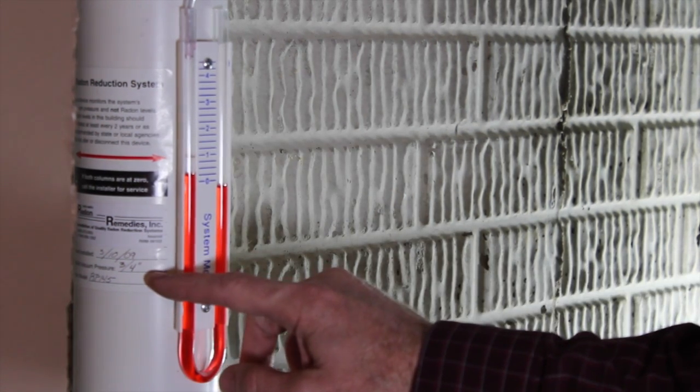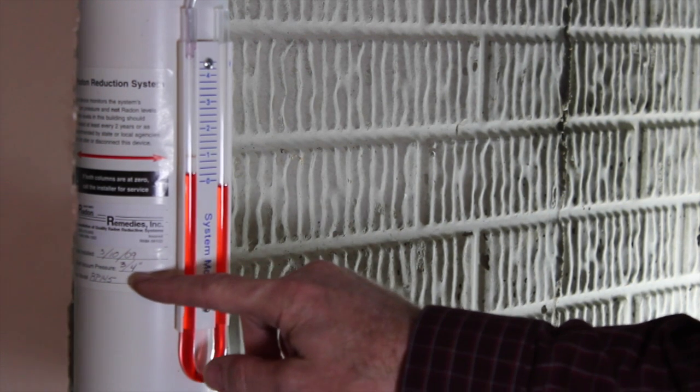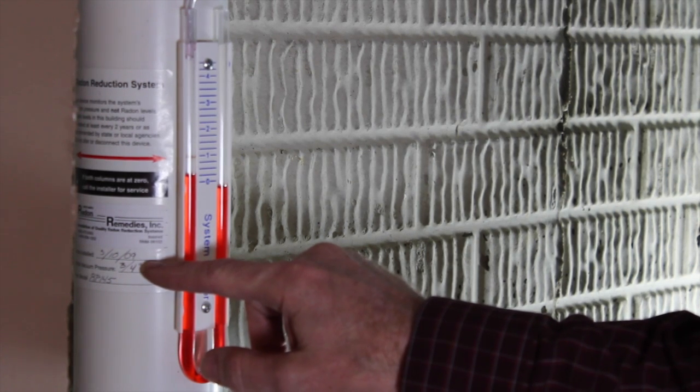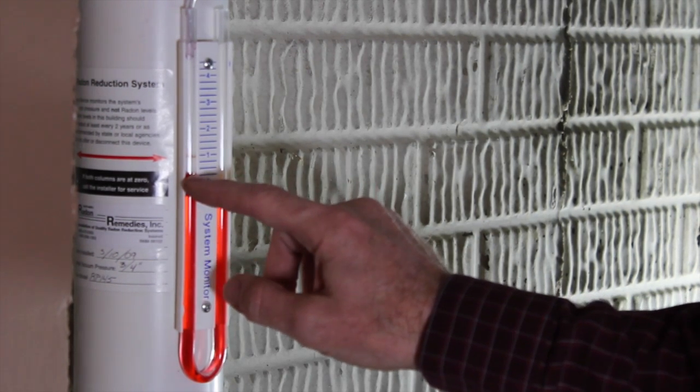The system will also have a label on it which tells you who installed it, when they installed it, the type of fan, along with the level that the fluid was at when it was originally installed.